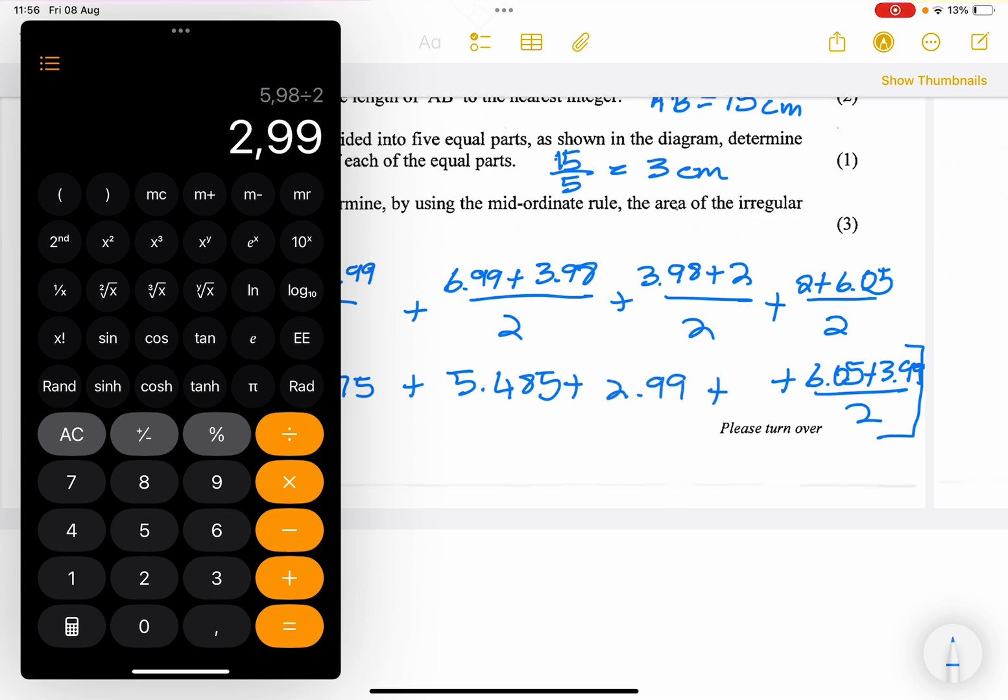The next one, we've got 2 plus 6.05, that's divided by 2, that gives us 4.025, and the last one, which is 6.05 plus 3.99, and this is divided by 2, and this is going to be 5.02.